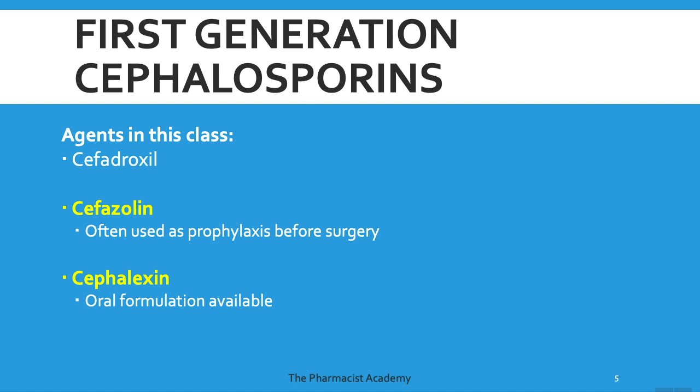The first-generation cephalosporins include several agents. The one we see a lot in clinical practice is cefazolin. We use this a lot as prophylaxis before surgery because these agents are really good at covering gram-positive bacteria, which are found on the skin. During surgery, you're making an incision through the skin, so it's possible that you may introduce some bacteria into the blood — so they give this usually before the surgery. We also have cephalexin, which is very common because it comes in an oral formulation, making it a great step-down option when a patient is discharged from the hospital after IV cefazolin.